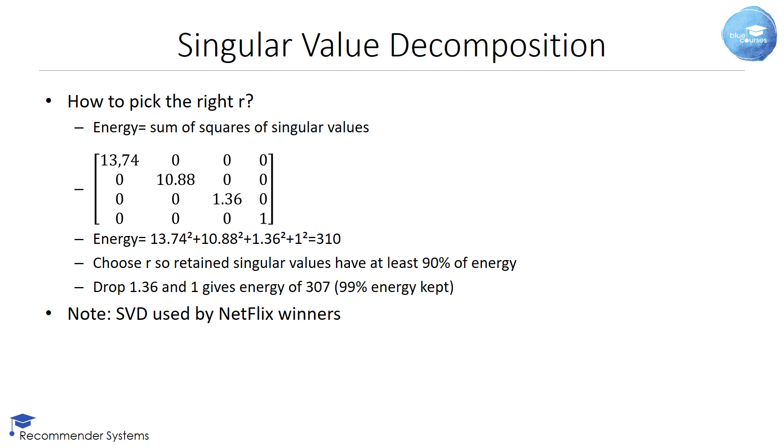An obvious question when doing SVD is to pick the right amount of singular values or R. This can be done using the concept of energy which is defined as the sum of the squares of the singular values. Let's reconsider our earlier sigma matrix. The energy is calculated as 13.74 squared plus 10.88 squared plus 1.36 squared plus 1 squared which gives us 310.